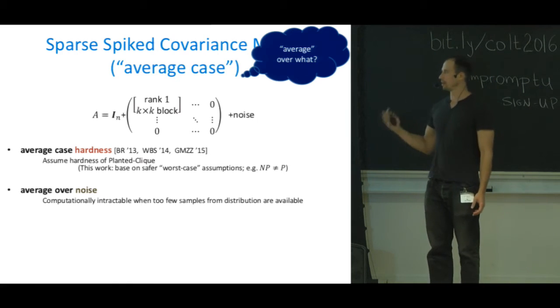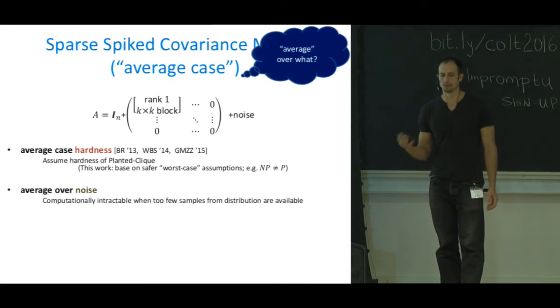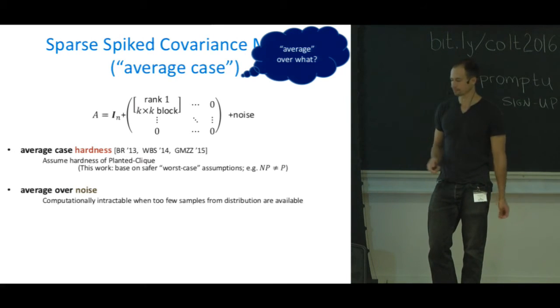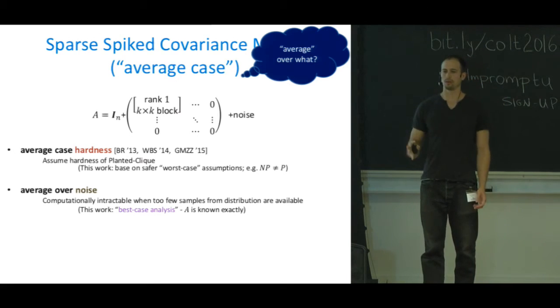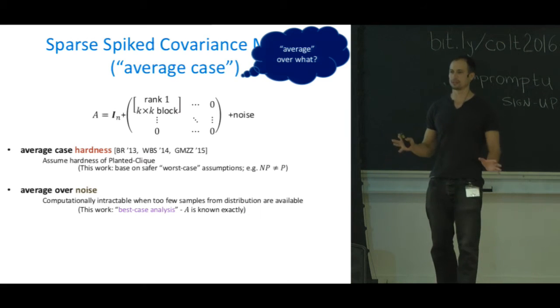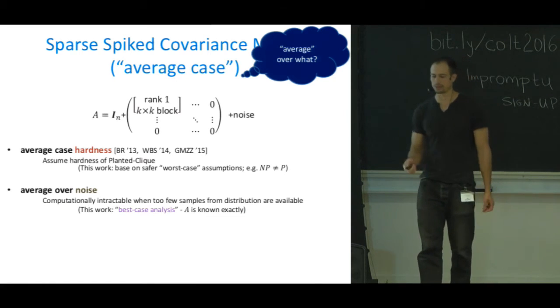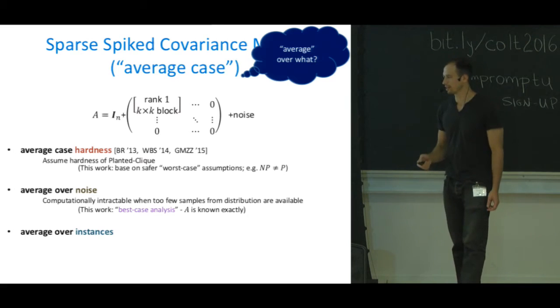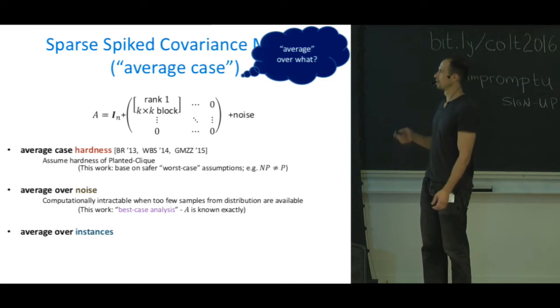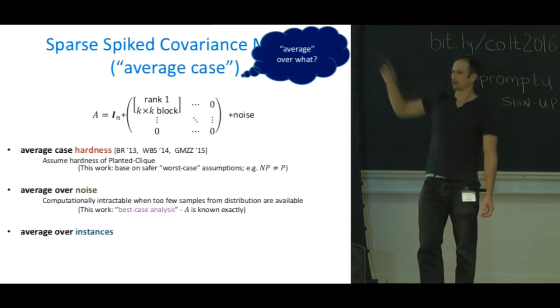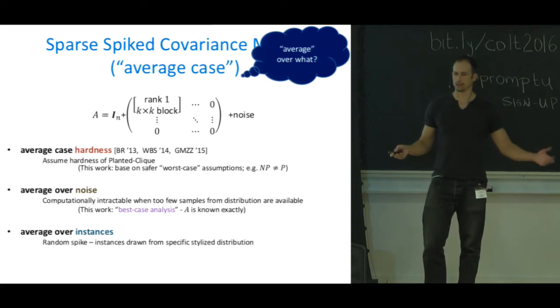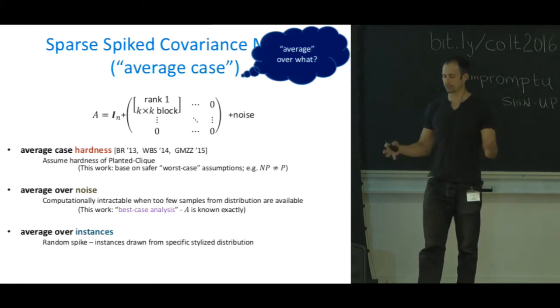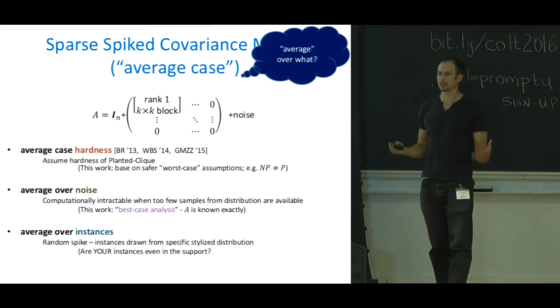If you average over the samples that you get, it's computationally intractable to find this hidden spike. We're going to do best case analysis, by which I mean I'm going to give you the exact matrix explicitly and we'll see that it's still hard to find the best sparse principal component. Lastly, there's average over instances. You can consider a random rank one k by k block—it's a really nice specific distribution, but your instances that you actually care about probably don't come from this distribution.